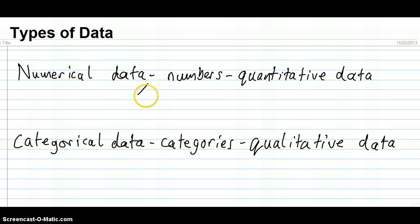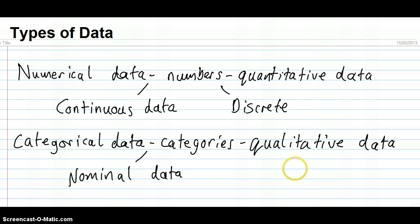Within numerical data we've got two branches or two types. The first type is continuous data. We'll look at what each of these mean in a moment. So, we've got continuous data and we've also got discrete data. In categorical data there's also two different kinds. There's nominal data and there is ordinal data.